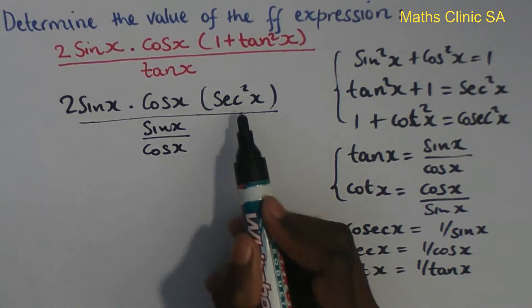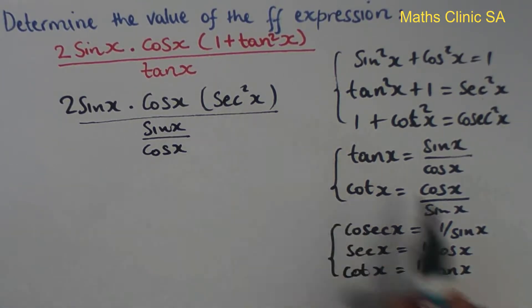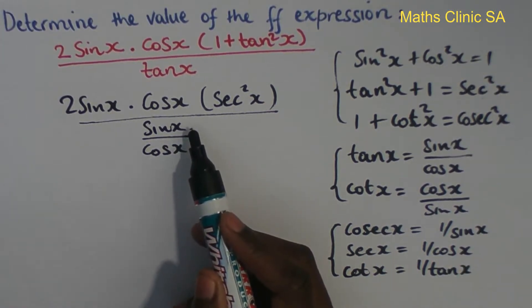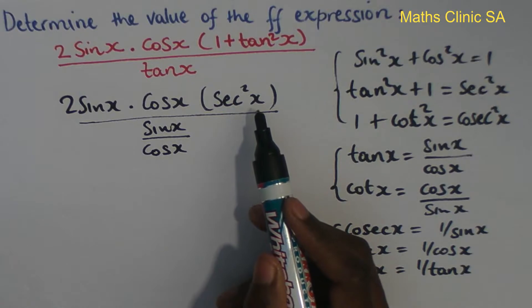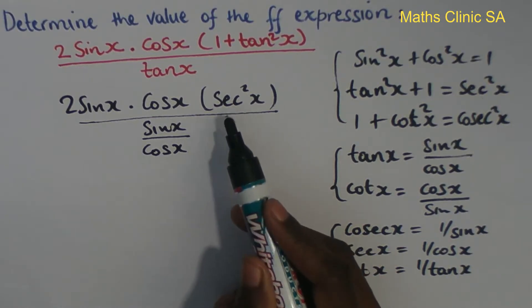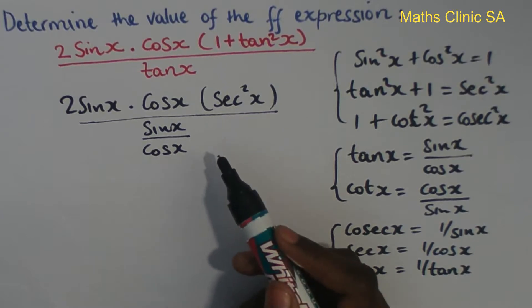And tan x is sine x divided by cos x. sec, sec equals 1 over cos. So sec squared equals 1 over cos squared x. Your mission here is to try and change these and write them as sine and cos.